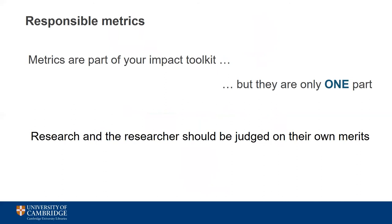These issues with traditional metrics have given rise to something known as the responsible metrics movement. This began about a decade ago and advocates that metrics should be used more ethically as one part of a wider picture of impact, and that researchers and their work should be judged on their own merits, not the reputation of the publications they appear in. You can have a good piece of research in a journal that's considered less prestigious, and poor research in a well-known title. The important thing is to look at the work itself and make your own assessment.